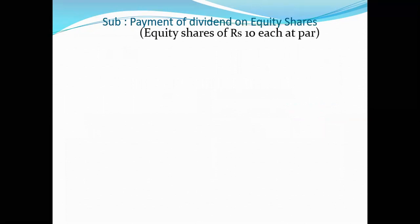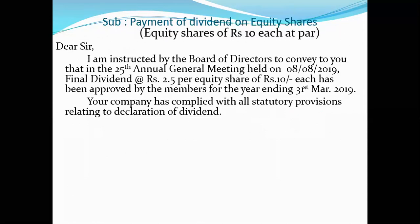For the body, we are using an informative first paragraph: 'I am instructed by the Board of Directors. In the Annual General Meeting — the 25th Annual General Meeting held in August 2019 — the final dividend meeting will be held on 8, 2019, and the date applicable for the dividend is 31st, 2019.'